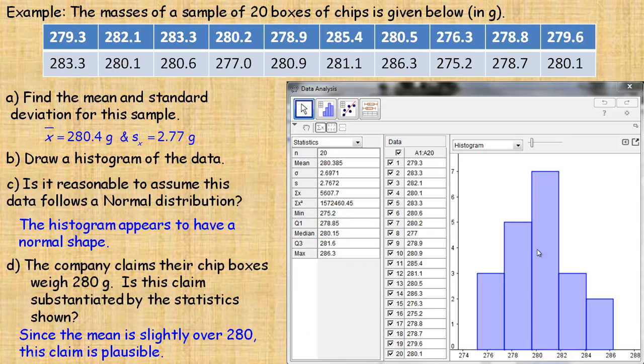So 280 is pretty close to the middle of the graph, so there are some bags that are a little bit below and some bags that are a little bit above. And it's relatively bell-shaped, so that is a reasonable claim.